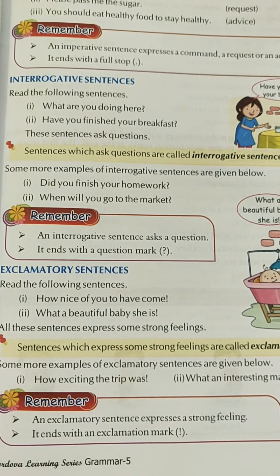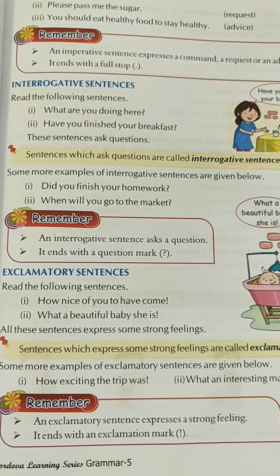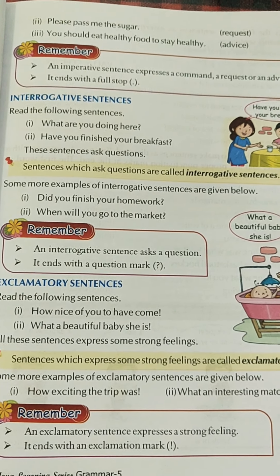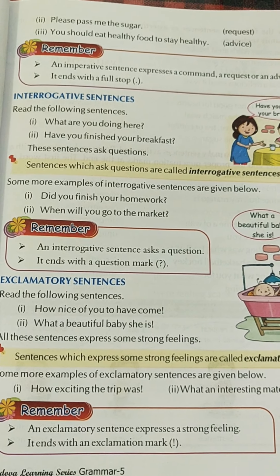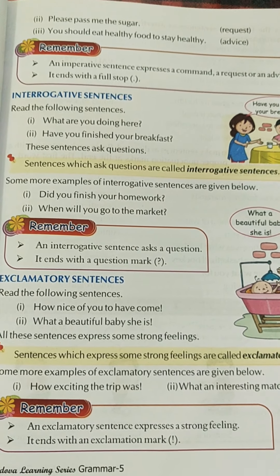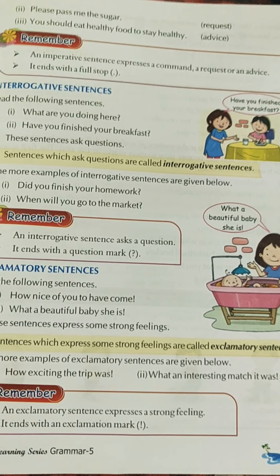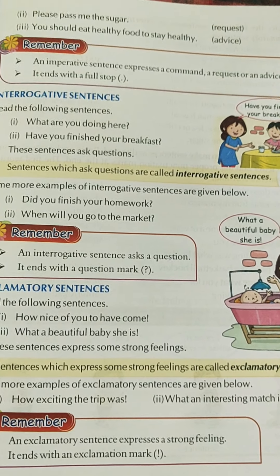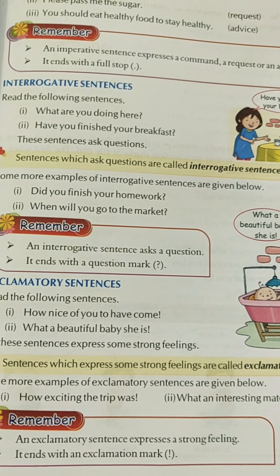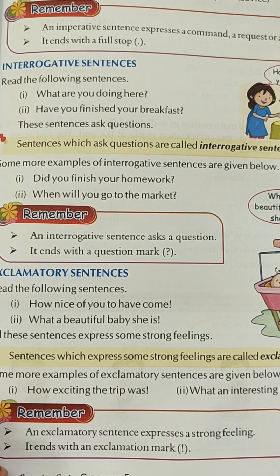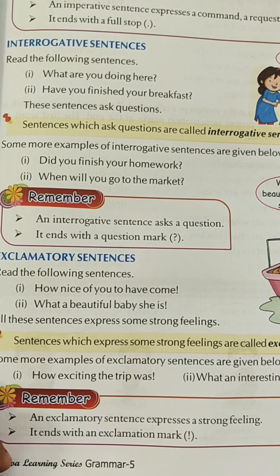The last kind is exclamatory sentences. Exclamatory sentences express a strong feeling. For example: 'How nice of you to have come in!', 'What a beautiful baby she is!', 'How exciting the trip was!', 'What an interesting match it was!' All of these end with an exclamation mark. An exclamatory sentence expresses a strong feeling and ends with an exclamation mark.